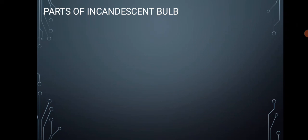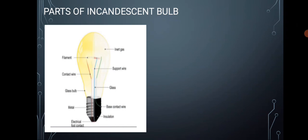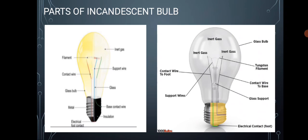Parts of an incandescent bulb include: inert gas, filament, contact wire, support wire, glass, glass bulb, metal, base contact wire, insulation, and electrical foot contact.